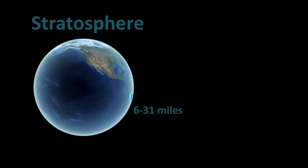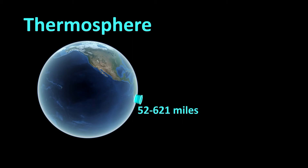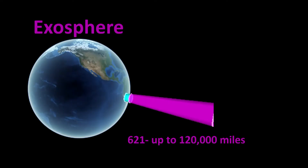Our next layer — pay attention — the mesosphere, that middle layer, is about 31 to 52 miles. That's actually the coldest layer. We might finally start to see a difference. The thermosphere is a little bit thicker — it goes from about 52 to 621 miles. It's also our warmest layer. And finally, we have the exosphere, which goes all the way up to about 120,000 miles. There's actually not a clear definition where the exosphere ends and outer space begins. So if you chose the exosphere, give yourself 100 points.